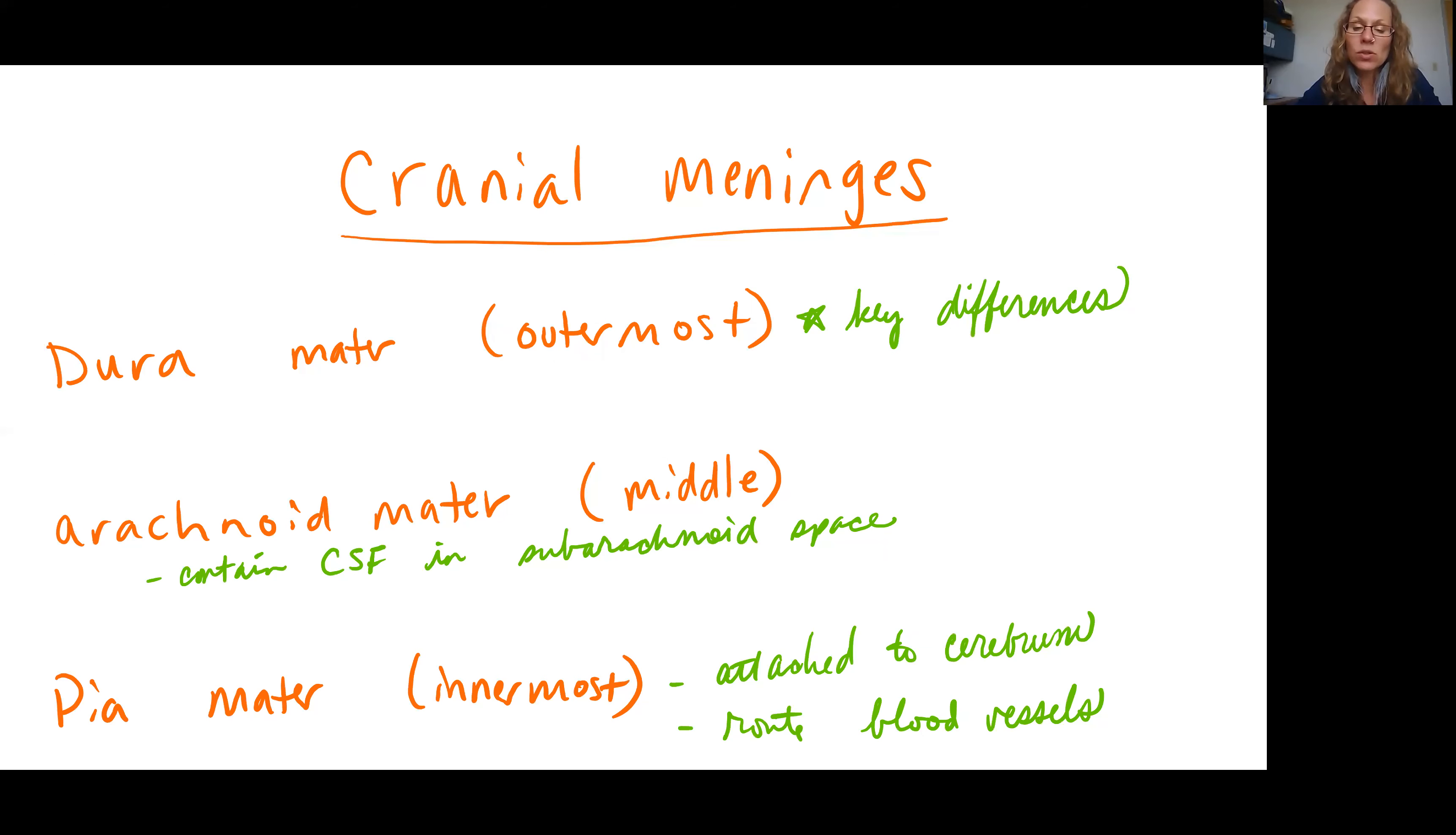When you look at the arachnoid mater, you still have that cerebrospinal fluid located in the subarachnoid space. And the pia mater is firmly anchored to the neural tissue and it does provide a route for blood vessels.